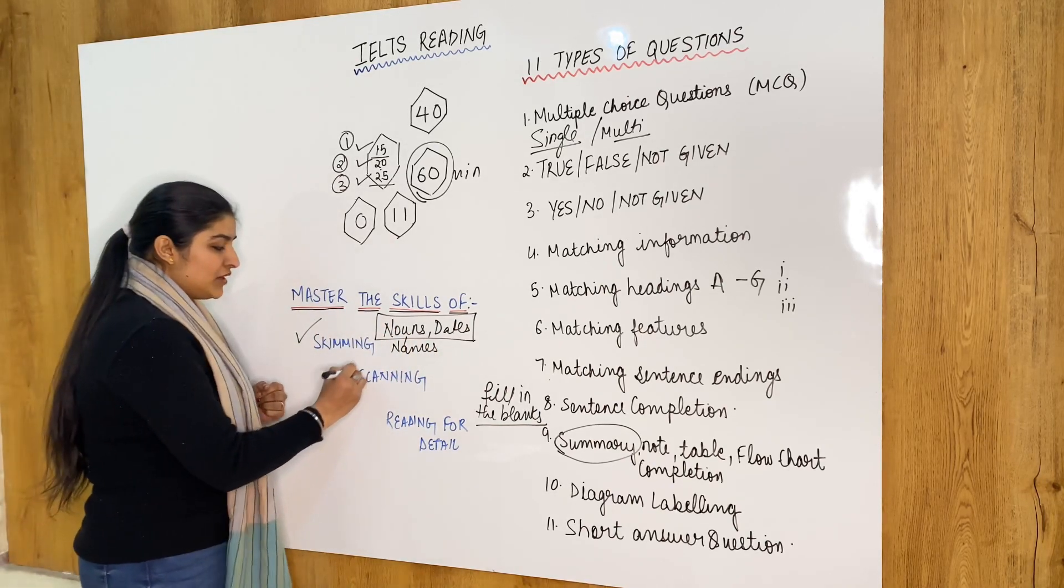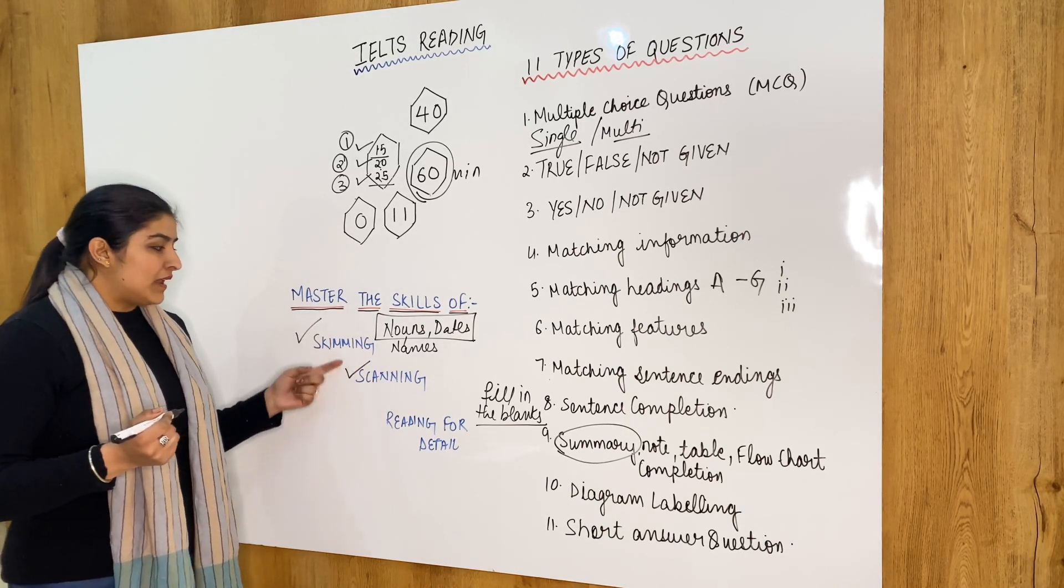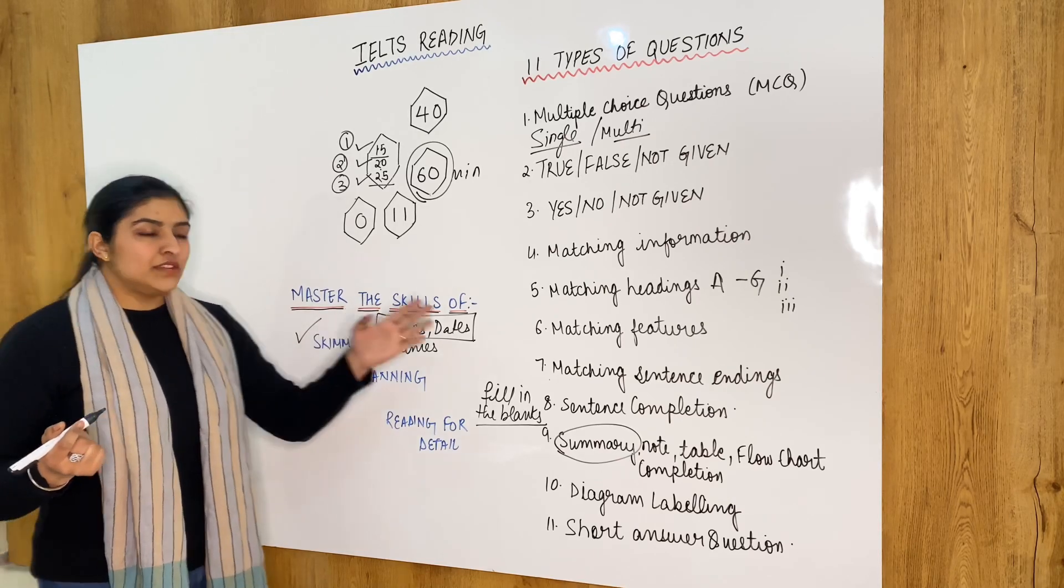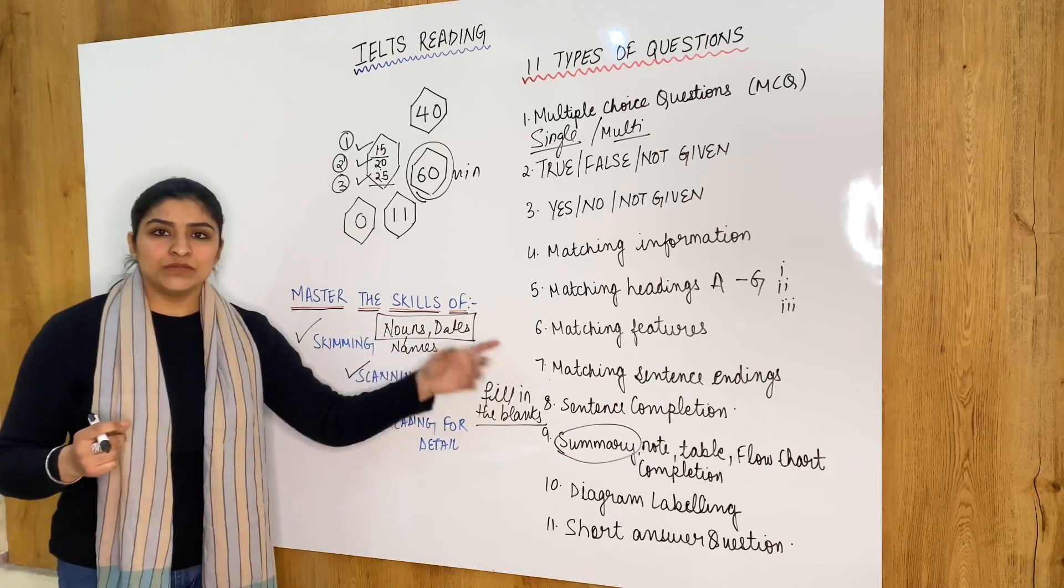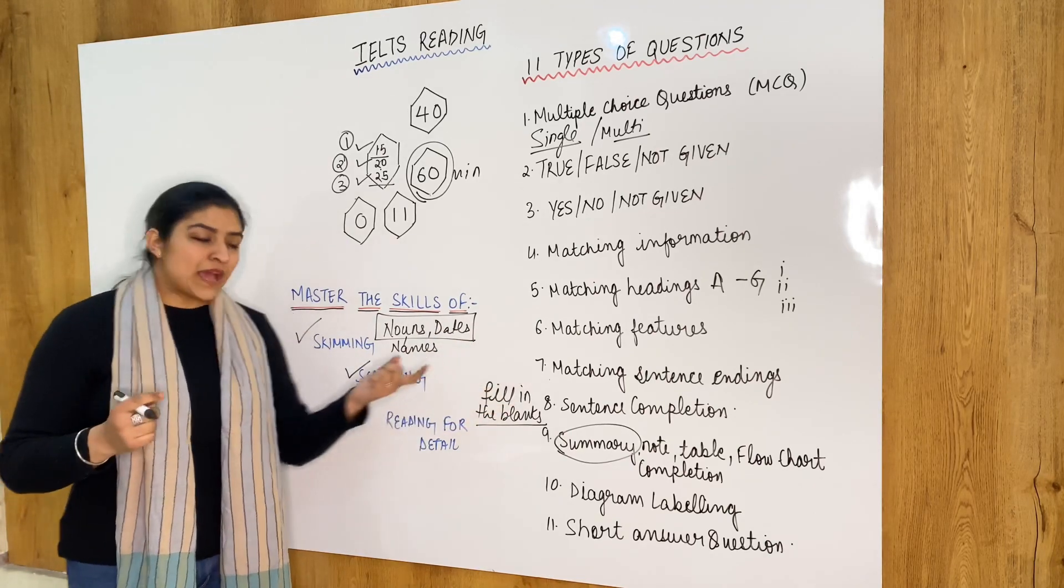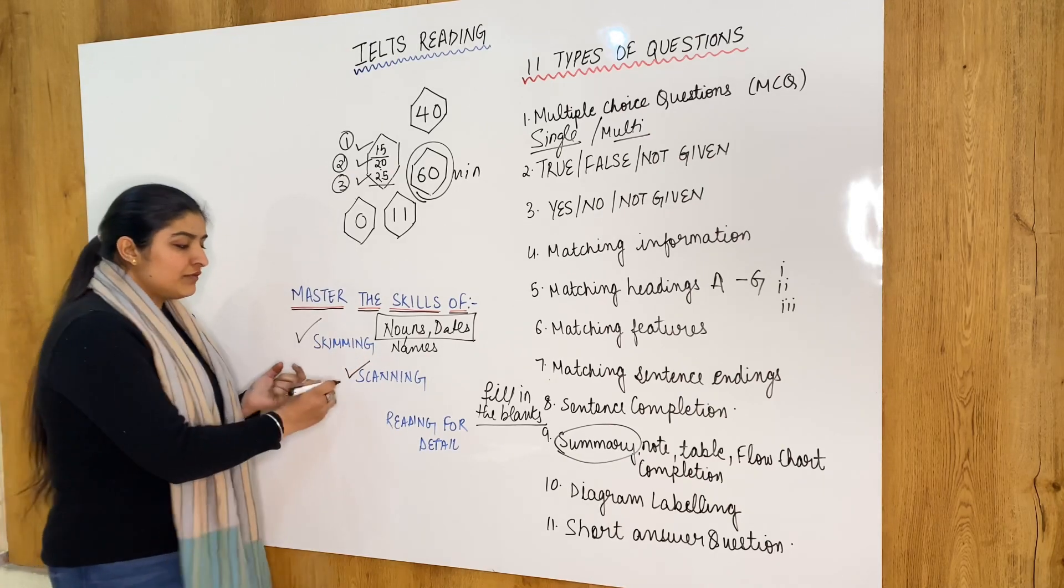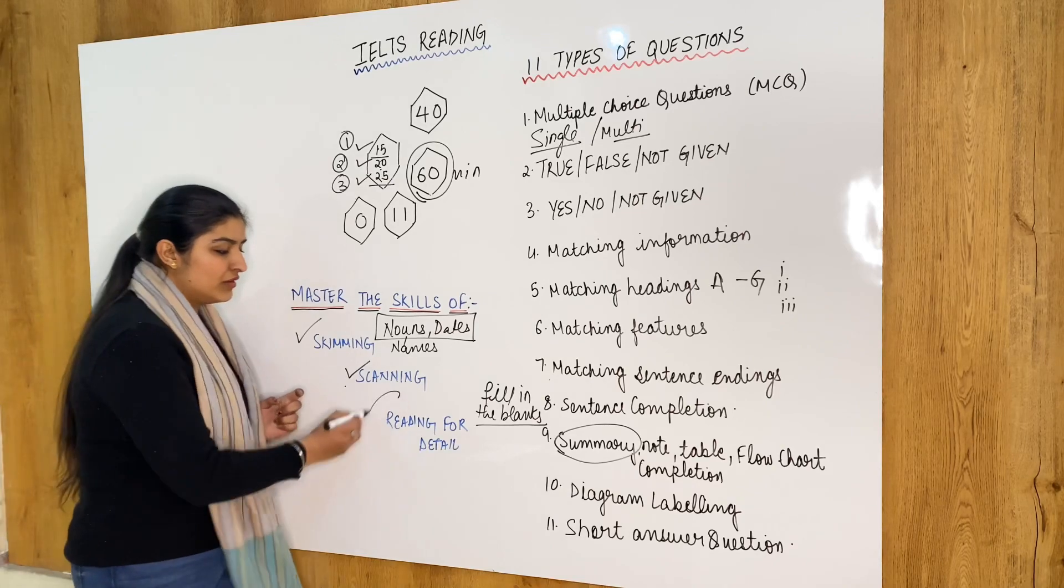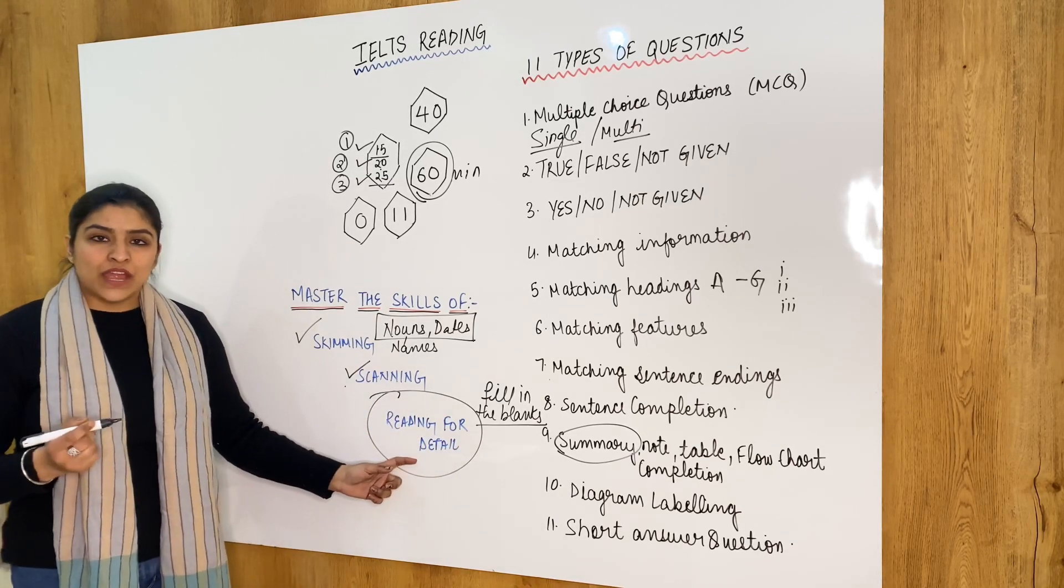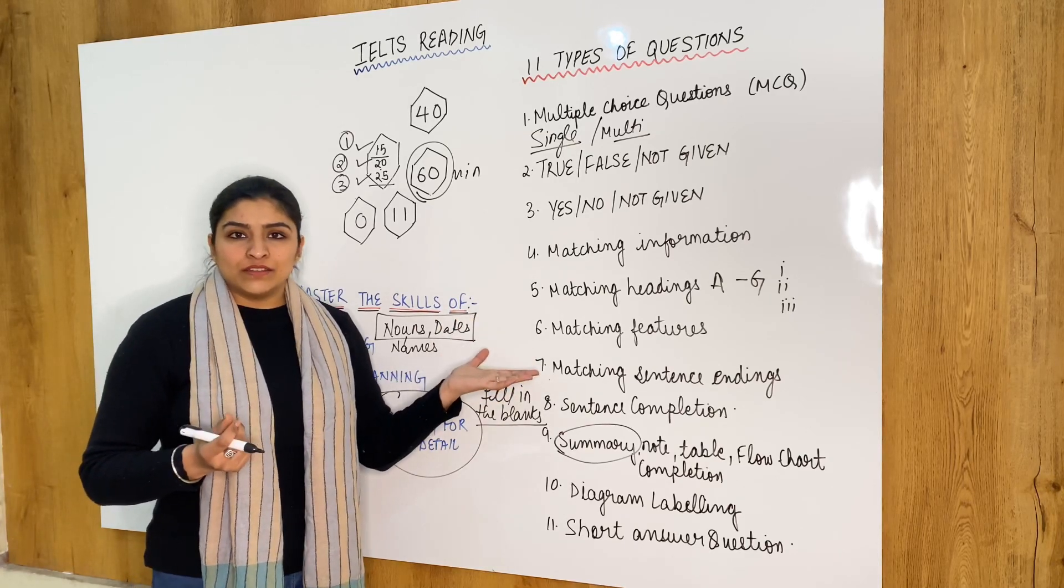The next step that you need to do is scan. Now scanning means once you have skimmed the paragraph, then you are going to read the question. After that you find the keyword in the question. Does it match to the keyword that you have marked in the passage or not? Once you find your word or the keyword in the passage, you need to read that location for the details. So that your answers, whatever you are looking for, you find it in the reading.